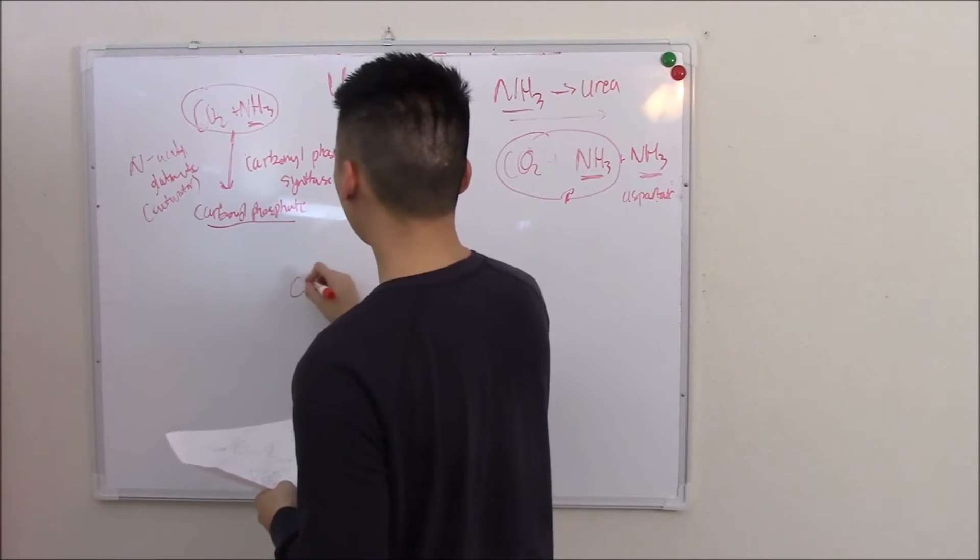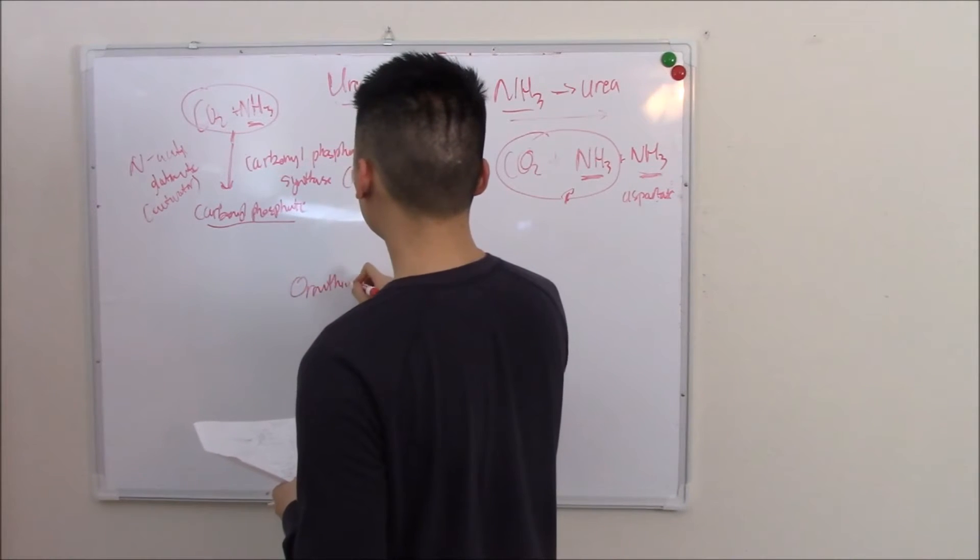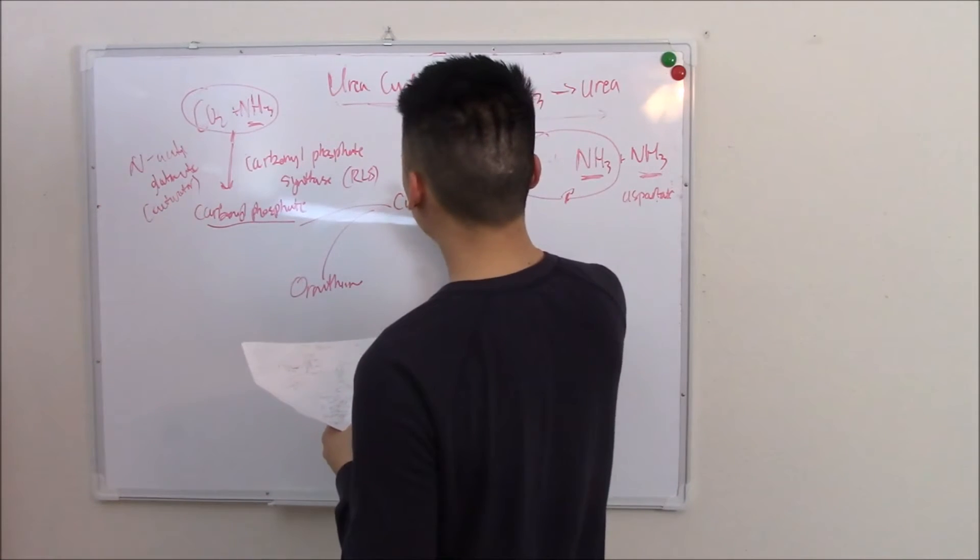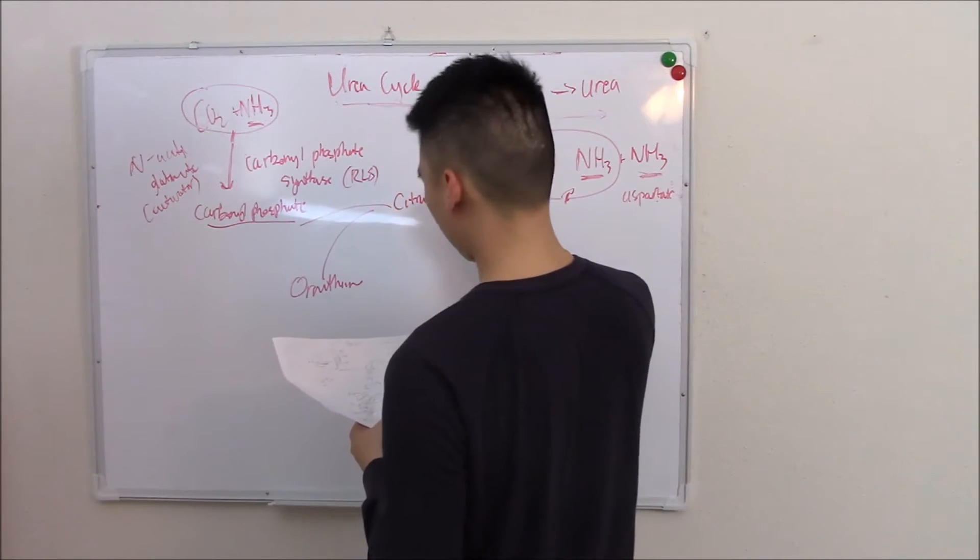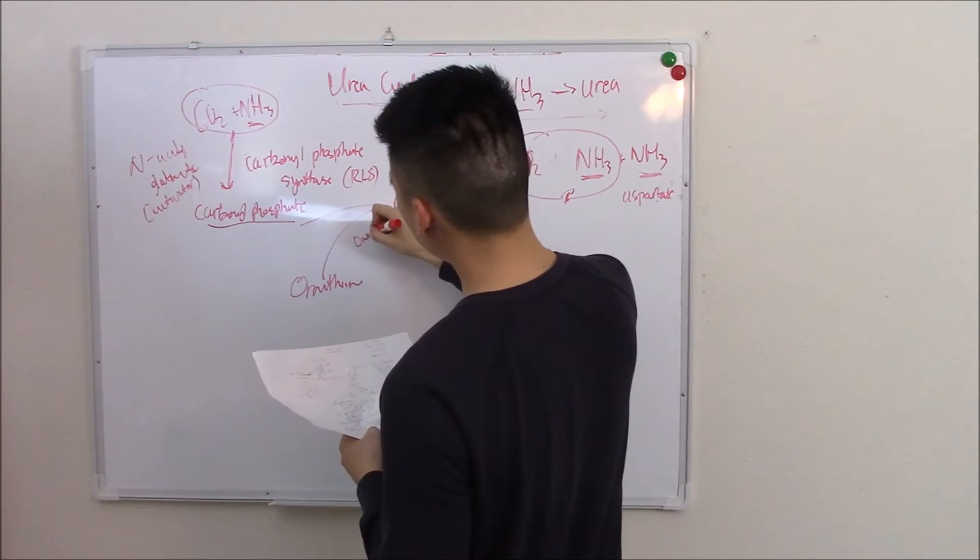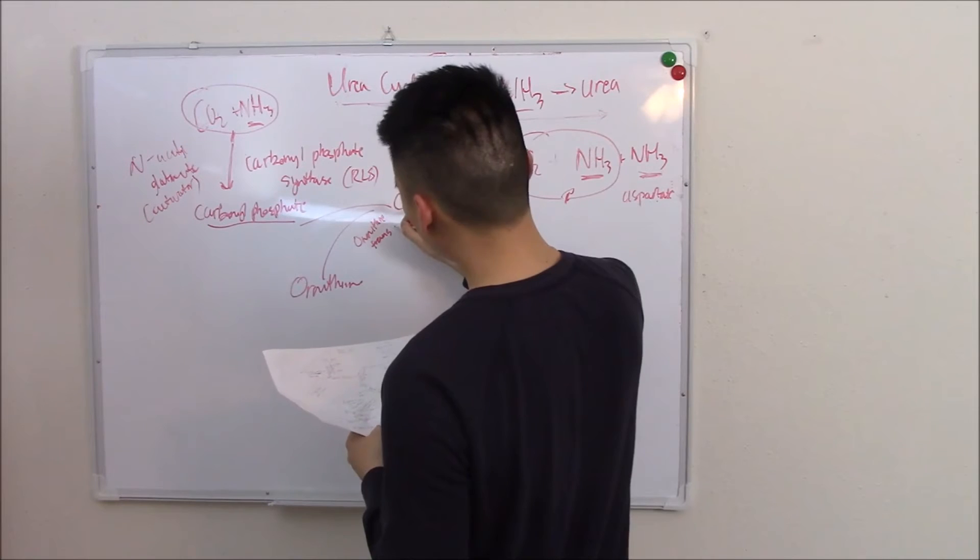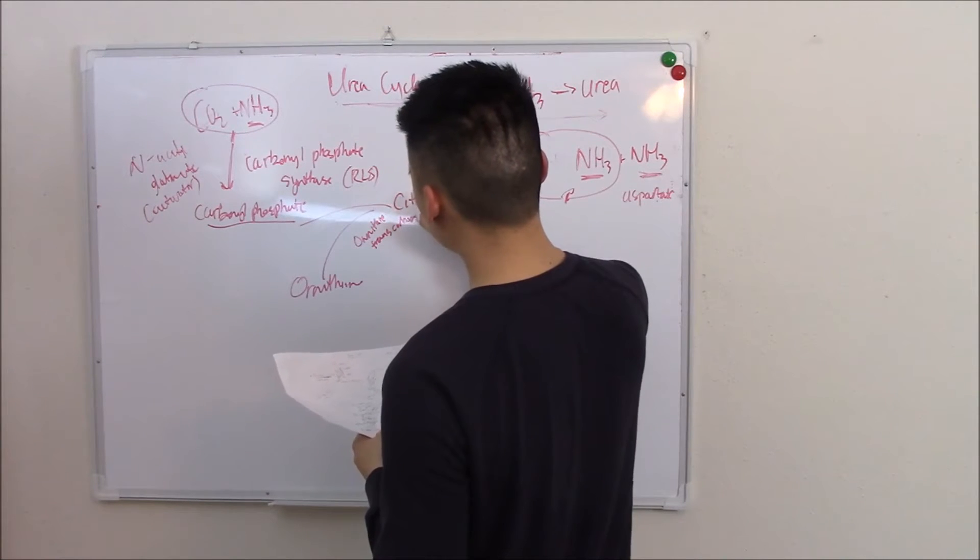Carbonyl phosphate now combines with ornithine to become citrulline, via ornithine transcarboxylase.